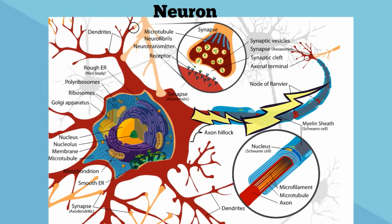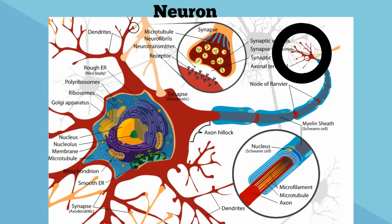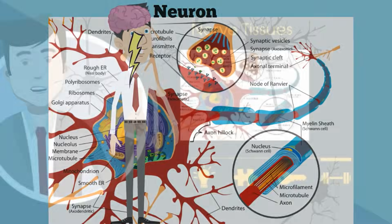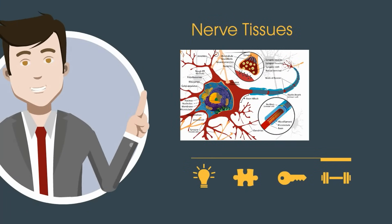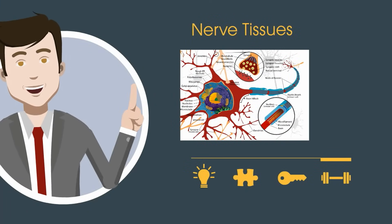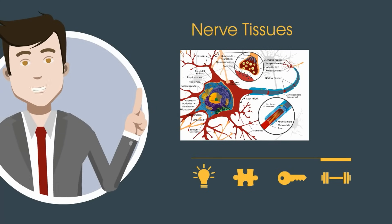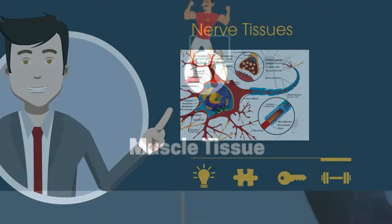An axon has insulation called a myelin sheath. At the end of the axon you have an axon terminal that communicates with dendrites of other cells, allowing electrical signals to pass and flow throughout your body. Nerve tissue is a group of neurons working together to pass electrical signals from your brain to many parts of your body.